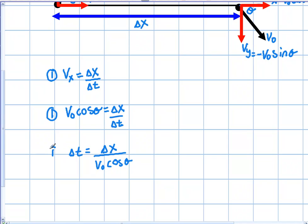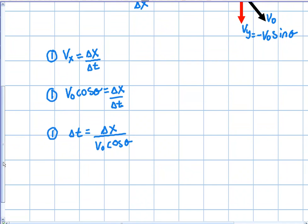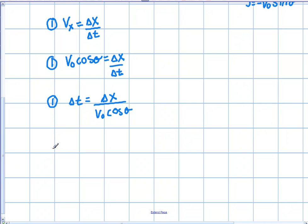The reason I solved for time is that in the next equation I'm going to substitute Equation 1 into it — so solving for time will make sense in a minute. Basically, we're using the terms we have: the range, the initial velocity, and theta.